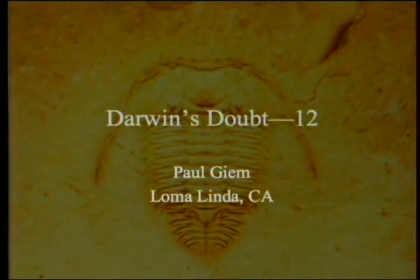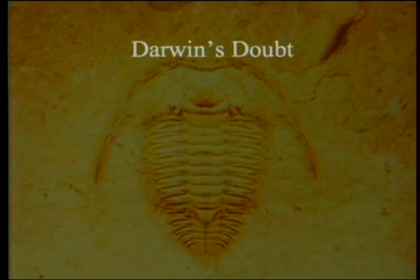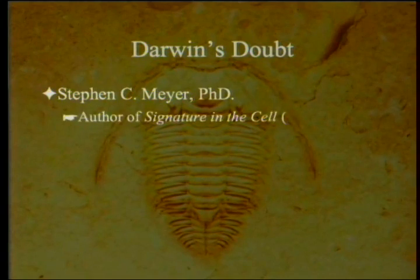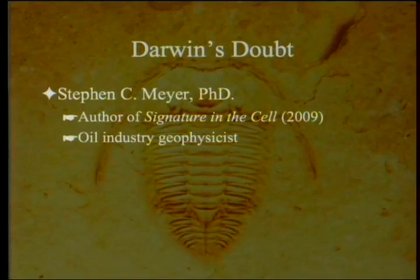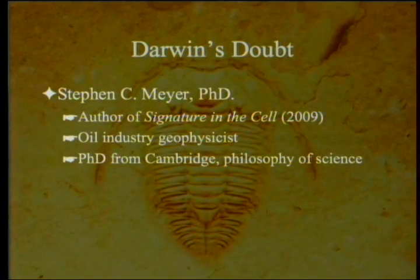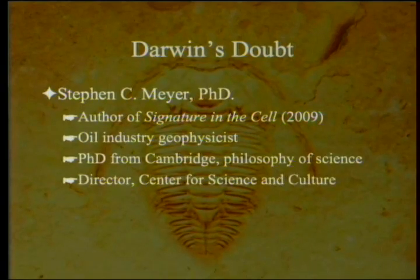Darwin's Doubt, Part 12. We've been going through Darwin's Doubt, written by Steve Meyer, author of Signature in the Cell. He was an oil industry geophysicist before he got interested in the question of the origin of life, and with that interest he went and got a PhD from Cambridge in the philosophy of science. He's the director for the Center for Science and Culture of the Discovery Institute in Seattle.